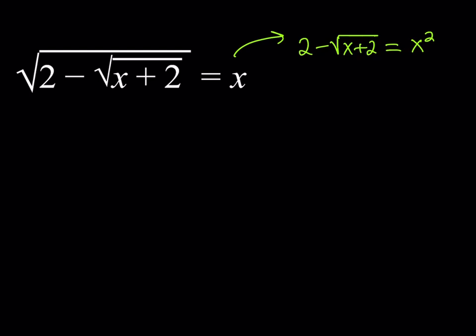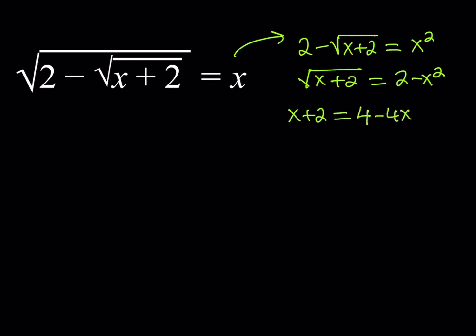Now of course you have another radical, so you want to get rid of that as well. Let's isolate that radical on the right-hand side. So we get square root of x plus 2 is equal to 2 minus x squared. Now we'll square both sides one more time, and this gives us x plus 2 equal to the square of (2 minus x squared), which expands to 4 minus 4x² plus x⁴. We end up getting a quartic equation.